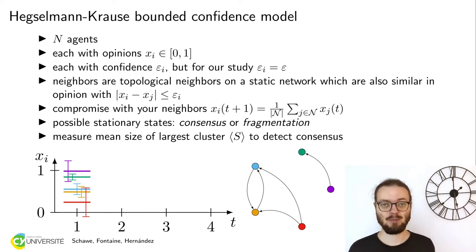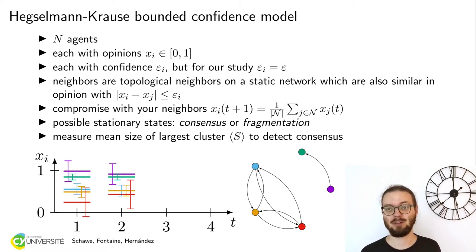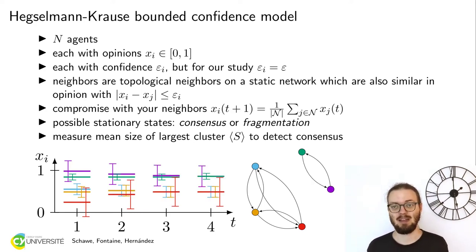The dynamics of this model is a simple rule of averaging. Every agent interacts at the same time synchronously with all of its neighbors and assumes the average opinion of all its neighbors and itself. In this example, in the first step, the bottom three will interact and get closer together. If we interact long enough, we will end up in a state which does not change anymore, the final state, and that is the state we are interested in.